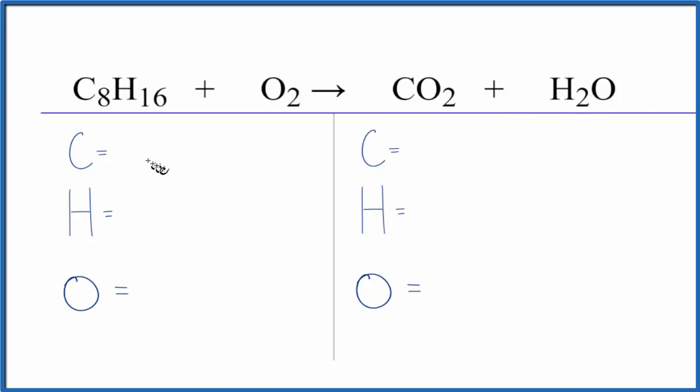So to balance the equation, let's count the atoms up on each side. We have 8 carbons, 16 hydrogens, and 2 oxygens.